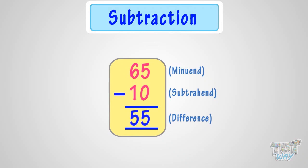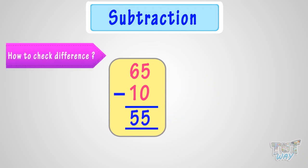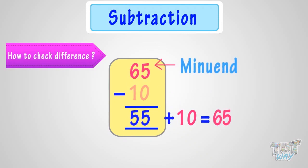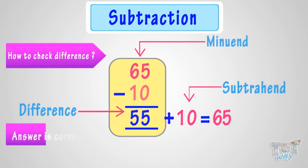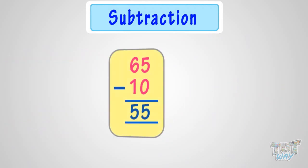Now, to check whether the difference is correct, add the subtrahend to the difference. And if you get the minuend, your answer is correct. In simple words, add the number you are subtracting to the difference, and if you get the number from which you were subtracting, your answer is correct.